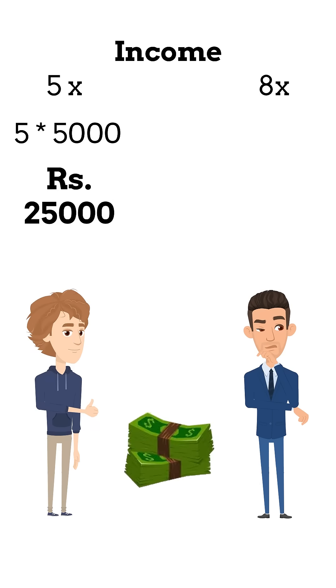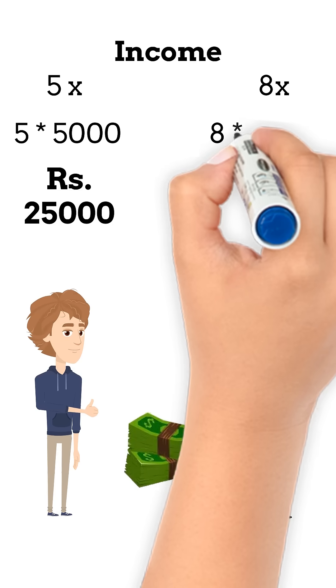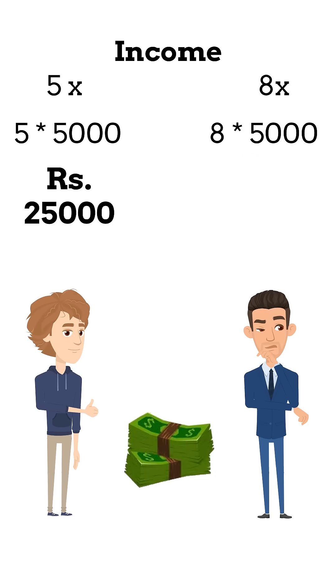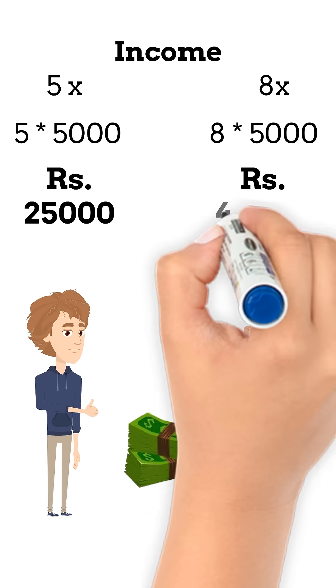And income of B is 8 multiplied by 5,000, that is 40,000 rupees.